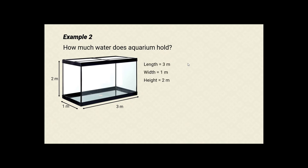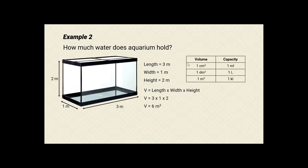Let's take note of the dimensions. The volume formula is length times width times height. Putting in the values we have 3 times 1 times 2 and we get 6 cubic meters. Let's use our guide to relate volume to capacity. The volume is 6 cubic meters, so we look at the cubic meter row in the guide. Therefore the capacity of this aquarium is 6 kiloliters.